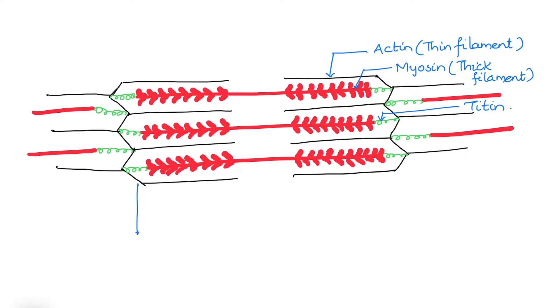The zigzag line at both ends is the Z line or the Z disc. This marks one sarcomere.